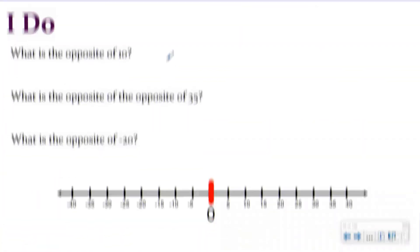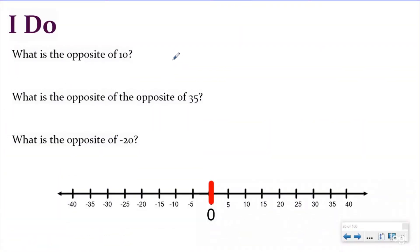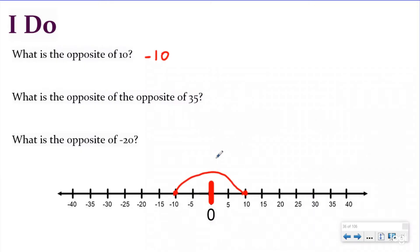Let's take a look at the I Do problem. It says: what is the opposite of 10? Here I have 10 and if I want to make it into an opposite, I would just put a negative sign in front of it. So if I had 10 and I wanted the opposite, negative 10 would be my answer.